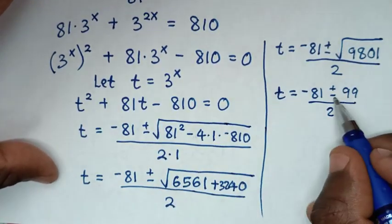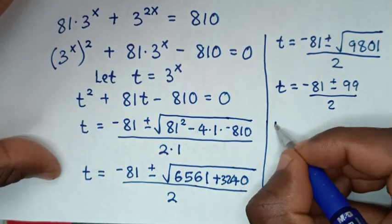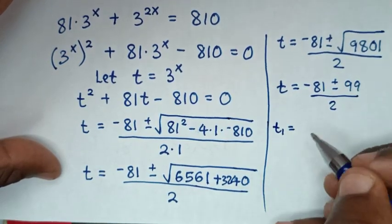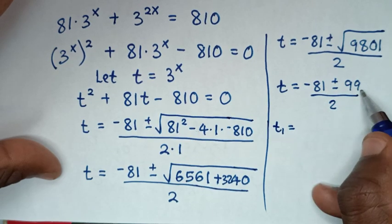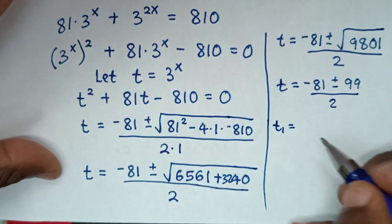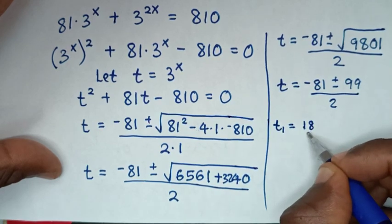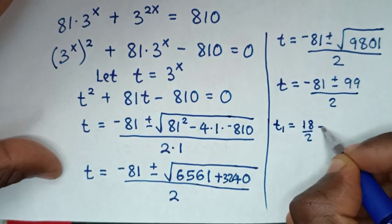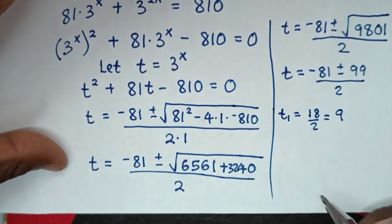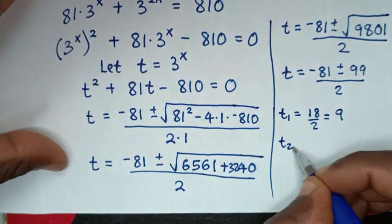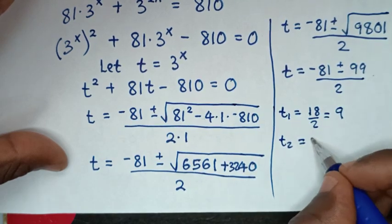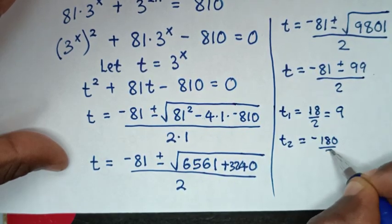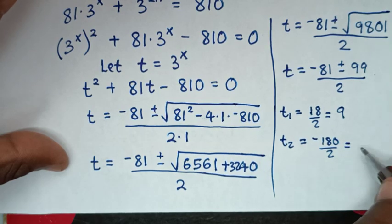Now from here we have two solutions. The first value of t: when it is positive, negative 81 plus 99 is 18 over 2, so t is equal to 9. The second value of t: negative 81 minus 99 is negative 180 over 2, which is equal to negative 90.